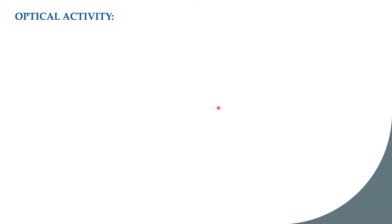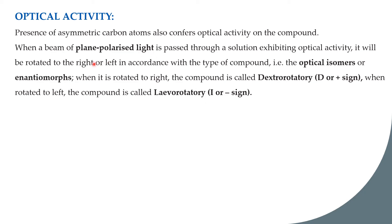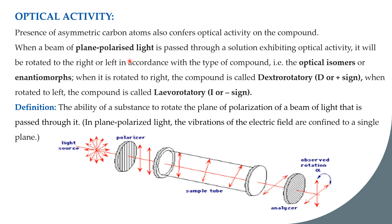Optical activity is the property that determines the D and L designation in stereoisomers. The presence of an asymmetric carbon confers optical activity on a compound. When a beam of plane polarized light — light confined to vibrating in a single plane by a polarizer — passes through a solution exhibiting optical activity, it is rotated.